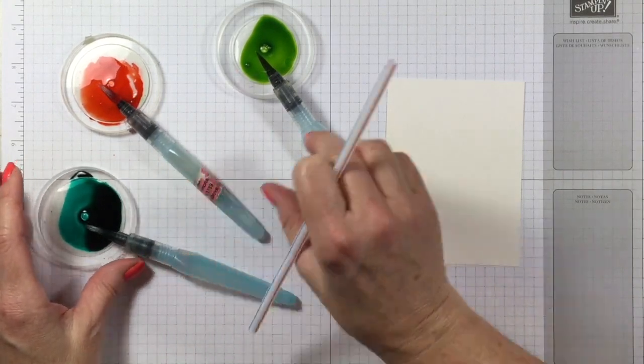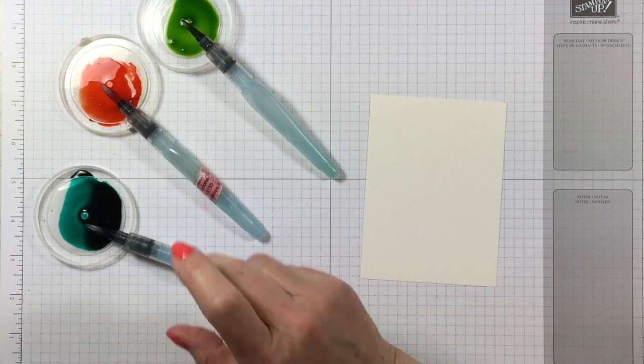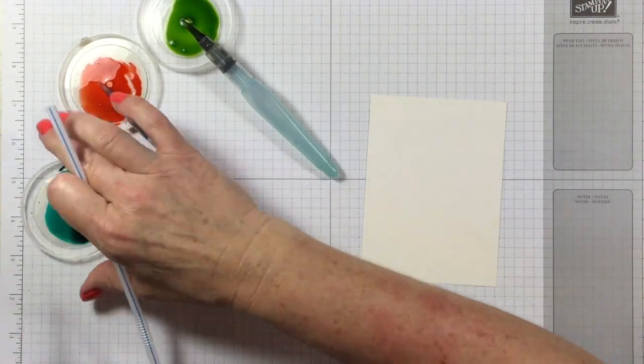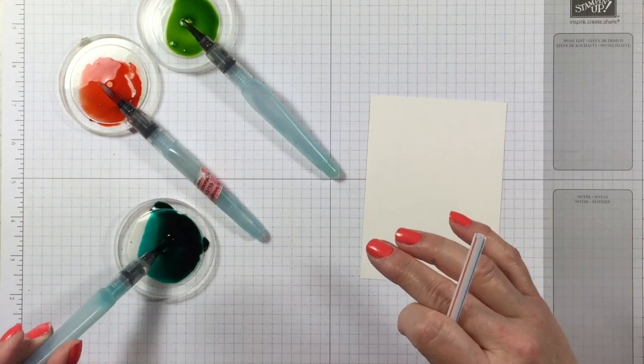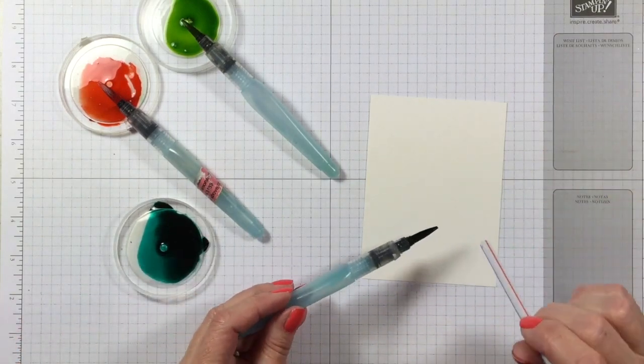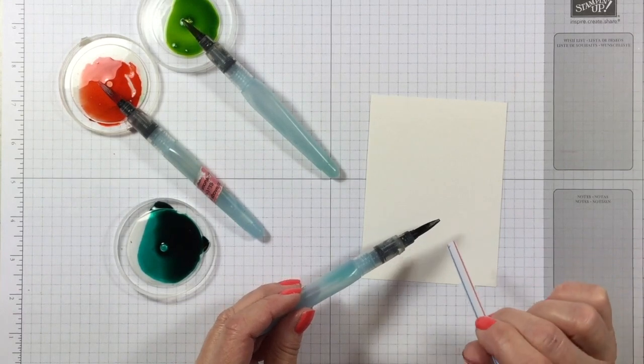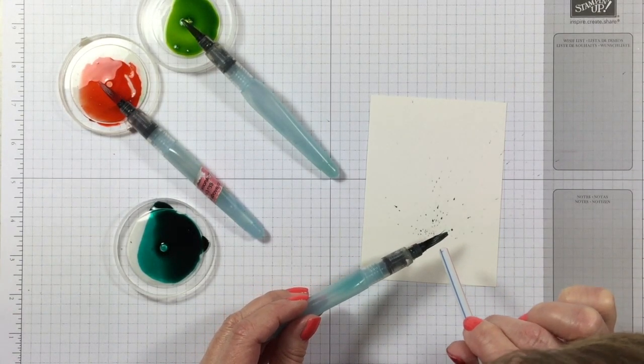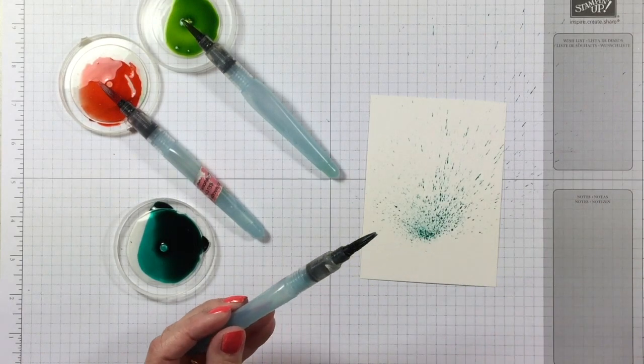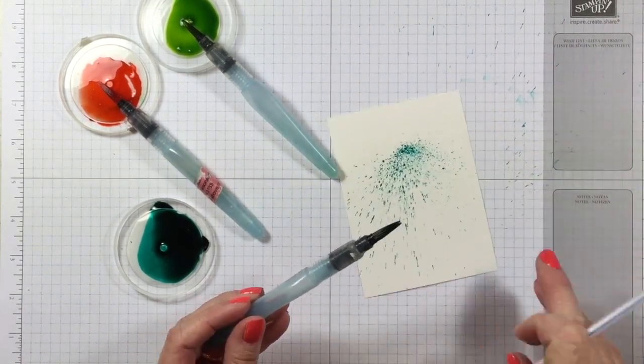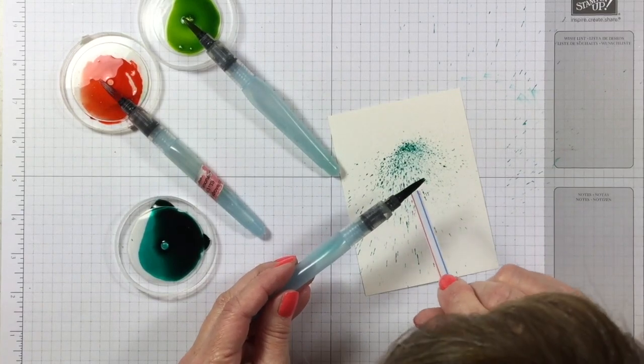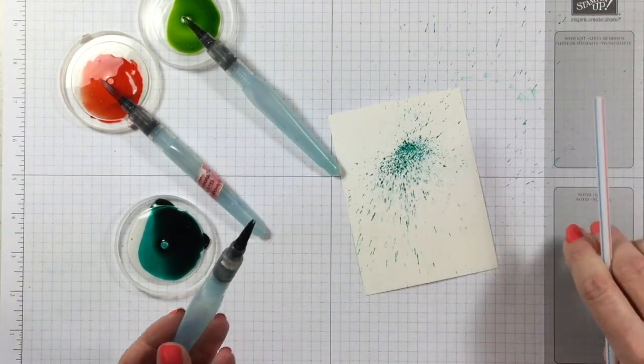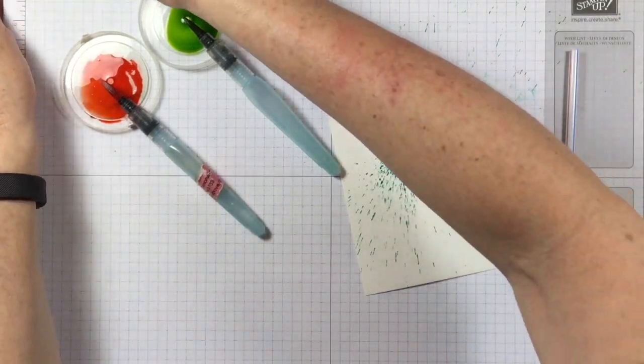Okay, it doesn't really matter which color you start with, but I'm going to start with my Bermuda Bay. And I'm getting this inked up really good. So there's lots of juice in it. And I'm going to put this on my card. And now I'm going to blow in my straw onto it. It's that cool or what? Oh my gosh. I absolutely love this. There we go. That's as much Bermuda Bay as I want.